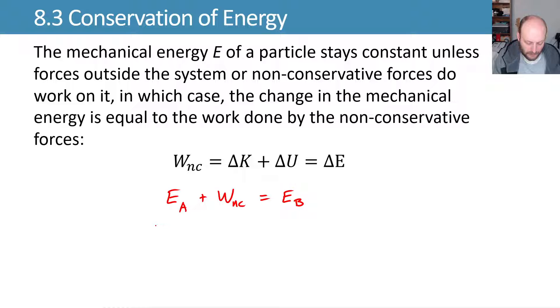If you want to include kinetic and potential energies explicitly, we can say our kinetic energy at A plus our potential energy at A plus whatever non-conservative work that happens is equal to our kinetic energy at B plus our potential energy at B.